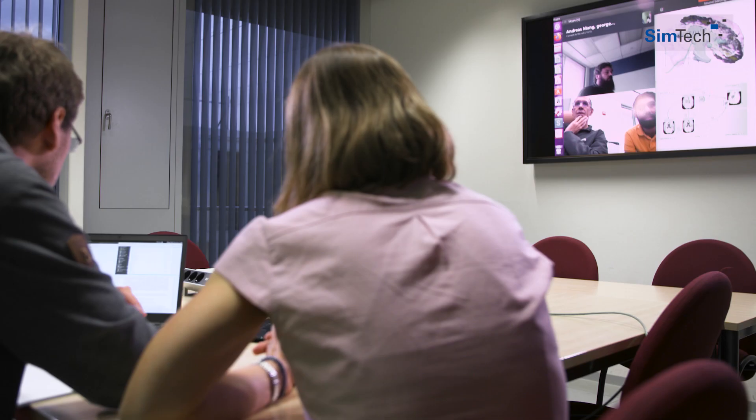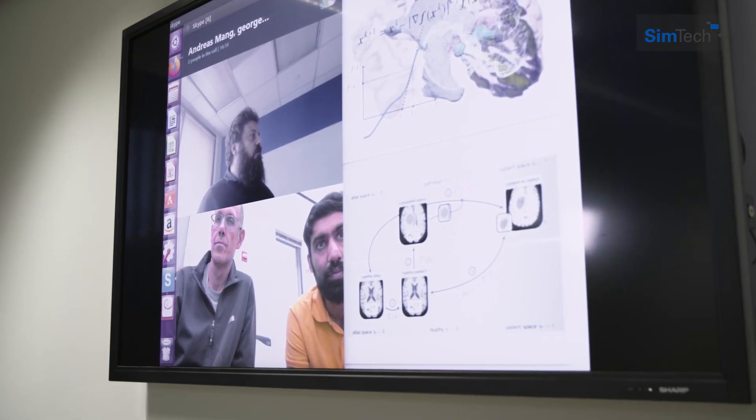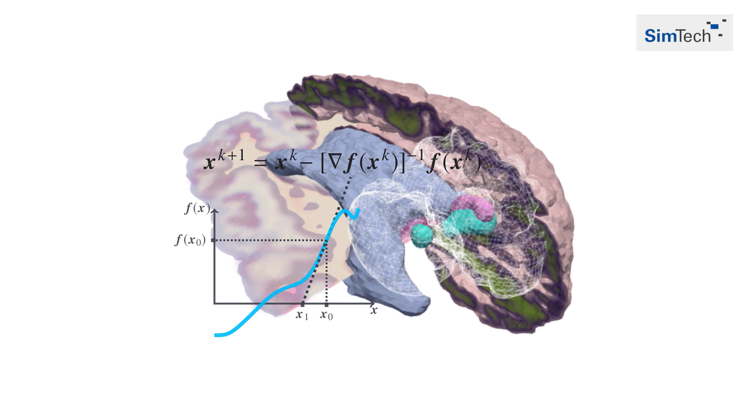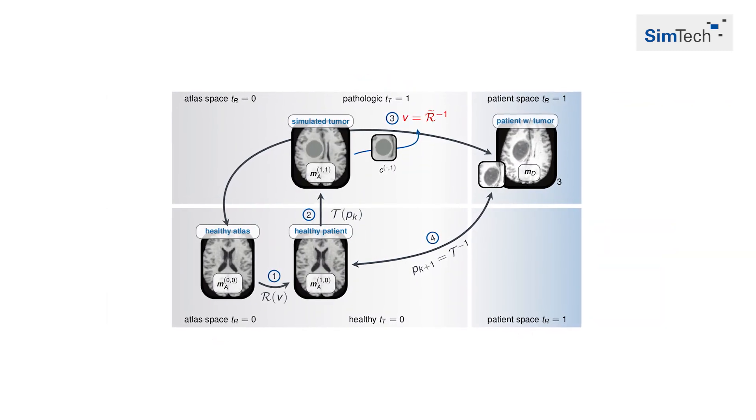In the best case we can achieve completely new results. With partners from Austin, Houston, and Pennsylvania, we have developed a framework to identify the initial location of brain tumors and growth parameters. We can do so based on just a single MRI image of a patient's brain and within a few seconds. This contributes to improving personalized diagnosis and therapy.